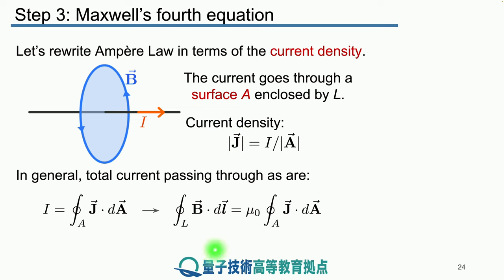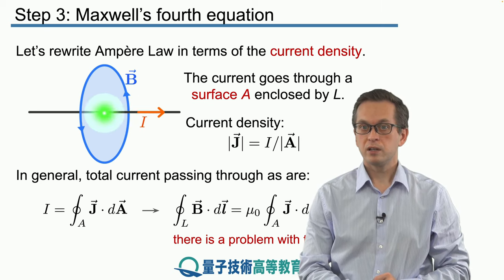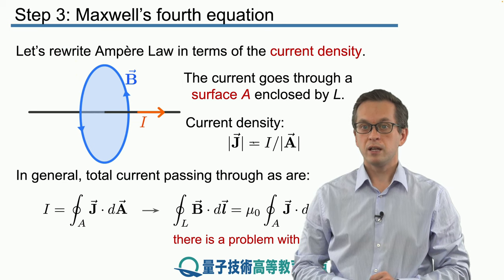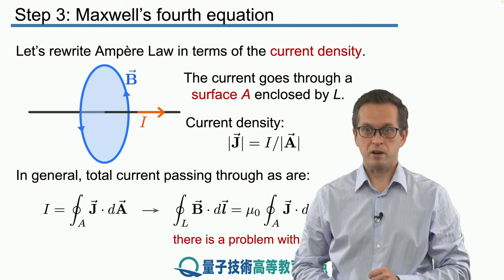The line integral around the closed loop L of the magnetic field is given by μ₀ times the surface integral of the current density with respect to dA. The problem with this is that it's not quite Maxwell's fourth equation. In this scenario — where we have just a simple wire carrying current and we look at the magnetic field induced by the current — this equation applies. But there are scenarios where there is a problem.